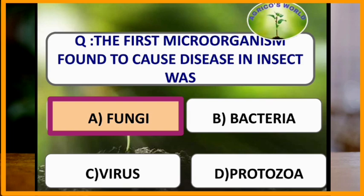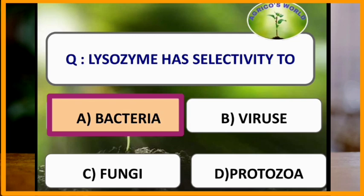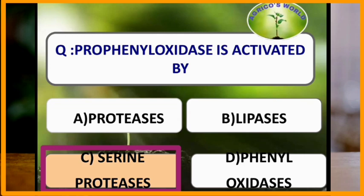Lysozyme has selectivity to bacteria. Prophenoloxidase is activated by serine proteases. Hemocytes are produced in lymph glands.